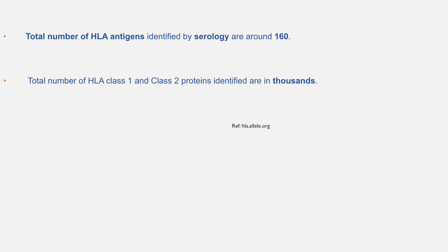However, not all HLA molecules can be identified by serology; the total number of HLA antigens identified by serology is only around 160, while the total number of HLA class 1 and class 2 molecules identified overall is in the thousands. Reasons for this low number include unavailability of antibodies and cross-reactivity.